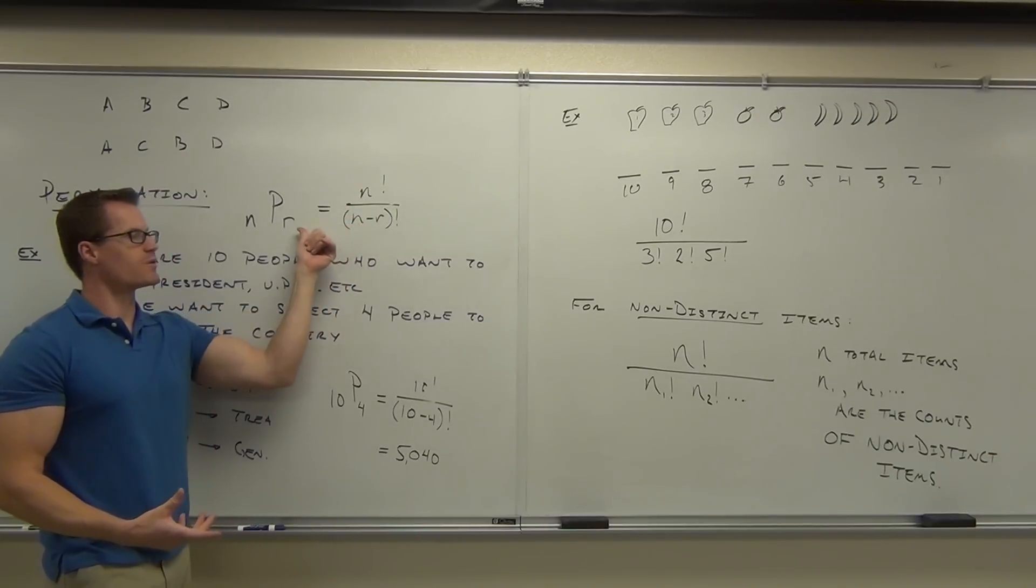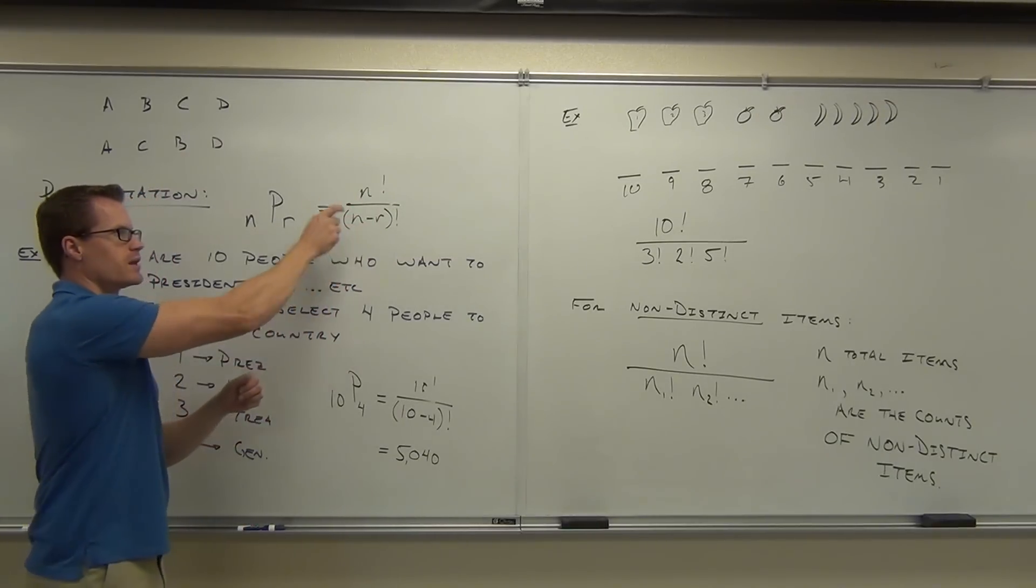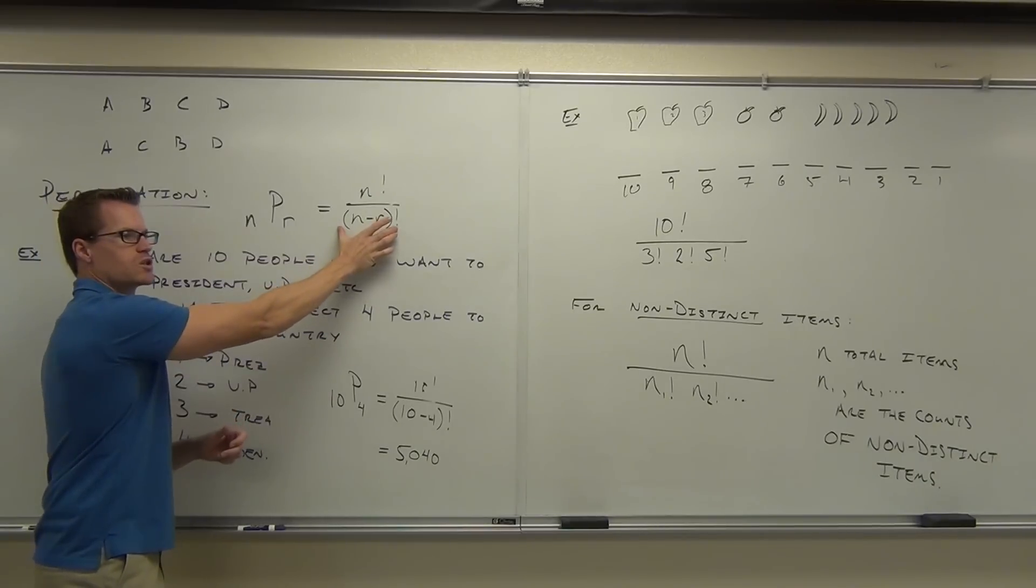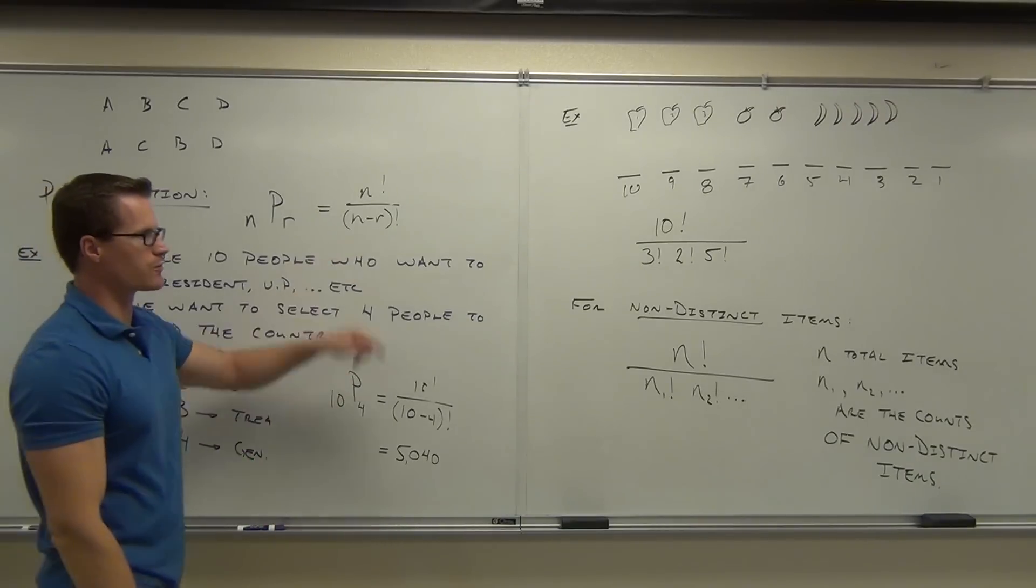If we're only looking for a certain number of those people, we're taking n permute r, or selecting r out of n total choices, and this is the way we show we don't want the rest of those arrangements. We can do this on a calculator, or we can do that with a formula.